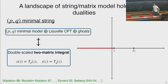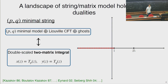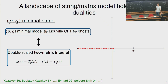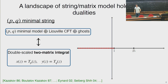Moving on to the (P,Q) minimal string, where P and Q are general co-prime integers: it's exactly the same on the worldsheet except I replace the matter theory with the (P,Q) minimal model. It still enjoys a matrix model dual, but now we need a double-scaled two-matrix model. The most convenient way to specify the two-matrix model is via the spectral curve—a Riemann surface on which all the perturbative quantities from the 1/N expansion naturally live. In this case, x(z) is a Chebyshev polynomial of z of degree P, and y(z) is a Chebyshev polynomial of degree Q, where z is a rational parametrization of the curve.